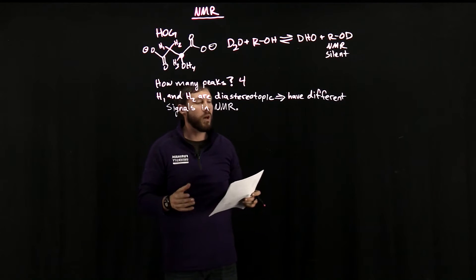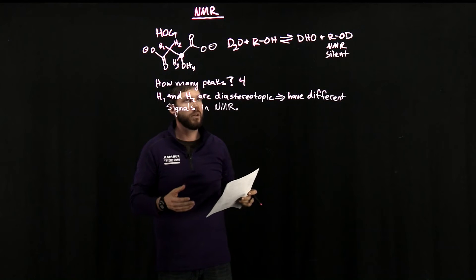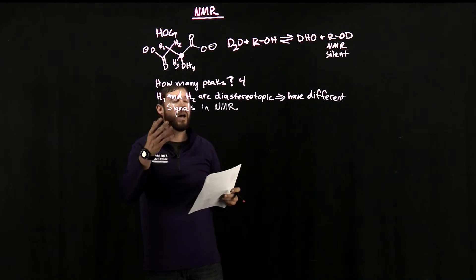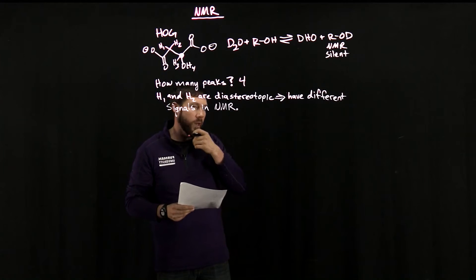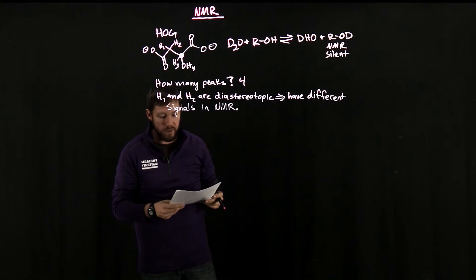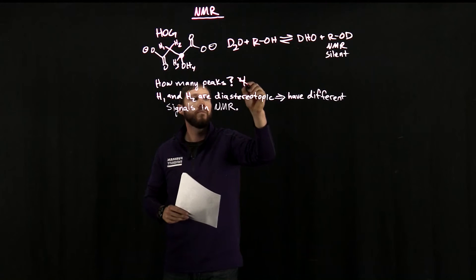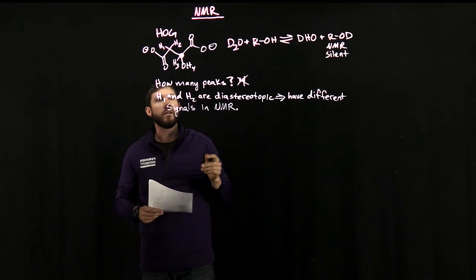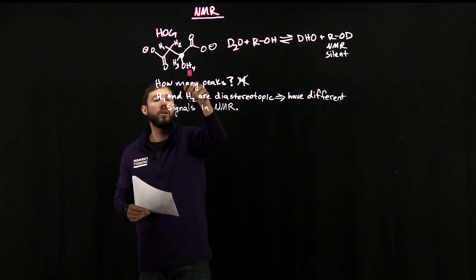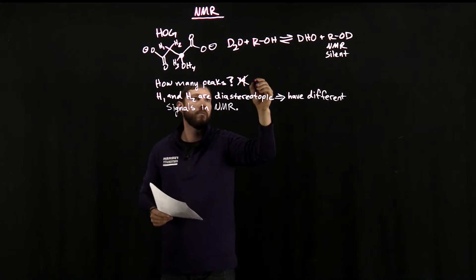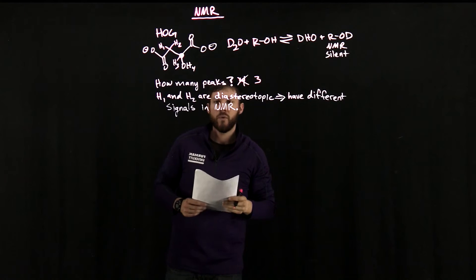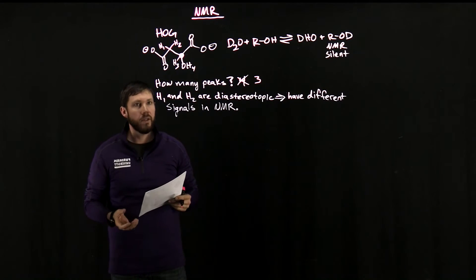We can use other solvents that do not readily exchange the deuteriums, and that would allow us to see that alcohol hydrogen, but not in this case. So we have to get rid of that, the anticipated alcohol hydrogen. So we'd expect to see possibly three with this information. There's a couple other things you need to keep in mind.